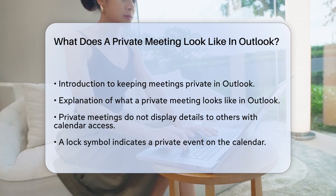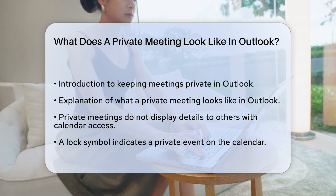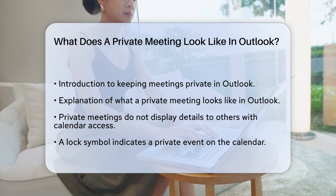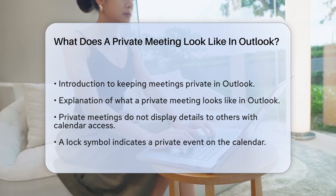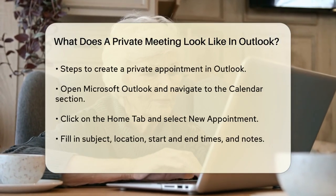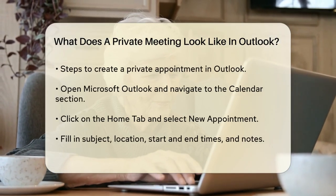When you create a private meeting or appointment in Outlook, it doesn't display the details of the event to others who have access to your calendar. When you mark an event as private, it will show up on your calendar with a lock symbol next to it, indicating that the event is private.